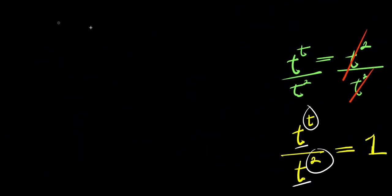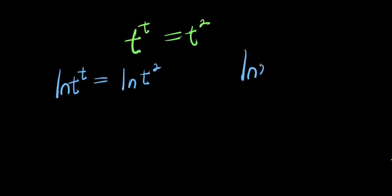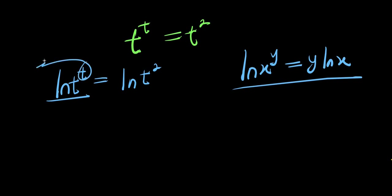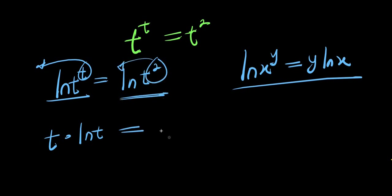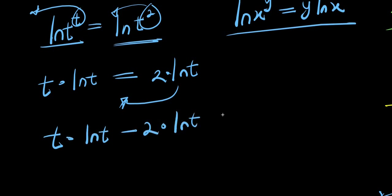The second method would be to take the natural log right away. I have natural log of t to the power of t equals natural log of t to the power of 2. Just like what we said earlier, the natural log of x to the power of y gives you y times natural log of x. So natural log of t to the power of t gives t times natural log of t, and applying the same identity on the right side, 2 times natural log of t. Moving the right side over, I have t times natural log of t minus 2 times natural log of t equals 0.